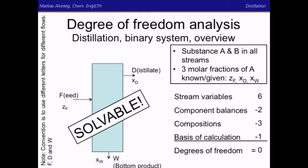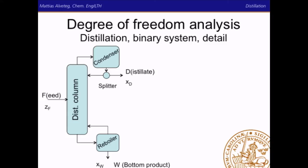A distillation setup typically consists of a distillation column equipped with a condenser and a splitter at the top and a reboiler at the bottom. Try to do a degree of freedom analysis for this detailed system, remembering that you have two substances in each flow.